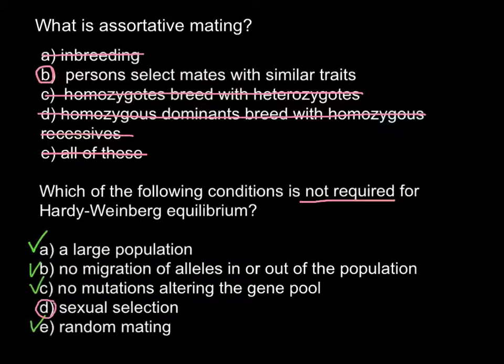For example, consider blood type — when you meet someone, you don't know their blood type, and it doesn't affect your preferences. Consider also allelic frequencies not expressed phenotypically, or single nucleotide polymorphisms, and many other genetic traits that have no influence on our sexual selection. Such traits would relatively remain in Hardy-Weinberg equilibrium.